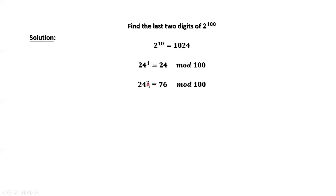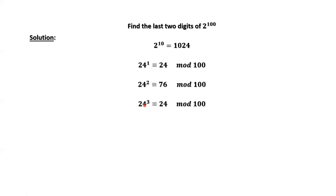24 squared has the same remainder as 76 if both sides are divided by 100. This means 24 squared and 76 have the same last two digits. We consider 24 to the power of 3 — we can easily check the last two digits of 24 to the power of 3 is 24. It comes back.